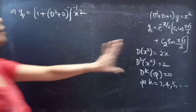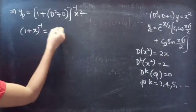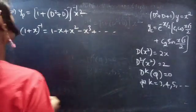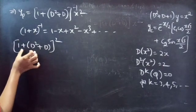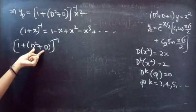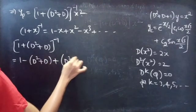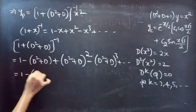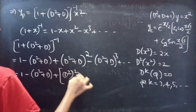With this in mind, we'll expand (1 + D² + D)⁻¹ using binomial series expansion: (1 + x)⁻¹ = 1 − x + x² − x³ + … Comparing (1 + D² + D)⁻¹ with (1 + x)⁻¹, we substitute x = D² + D to get: 1 − (D² + D) + (D² + D)² − (D² + D)³ + … Now let's expand (D² + D)²: we get D⁴ + D² + 2D³.